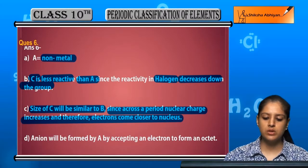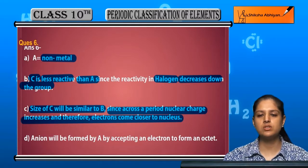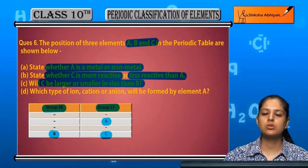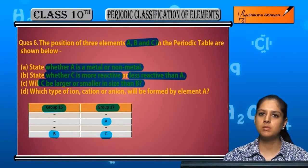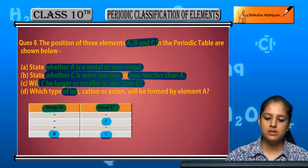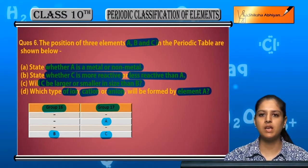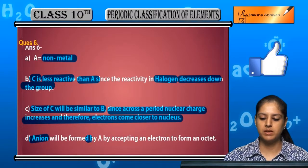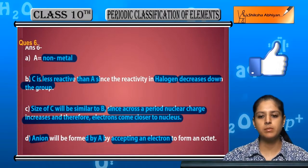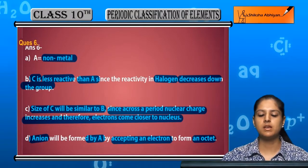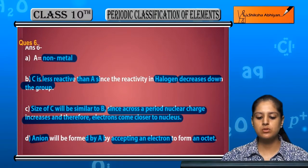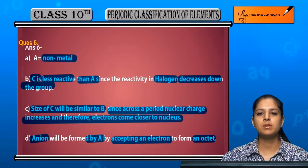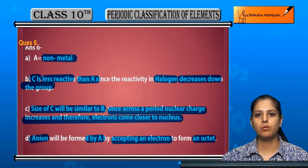Which type of ion will element A form? A will form an anion, because it will accept an electron to complete its octet. So A forms an anion.